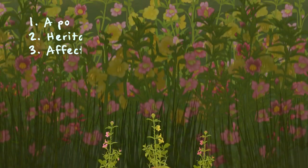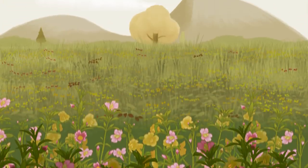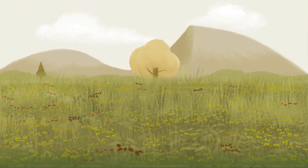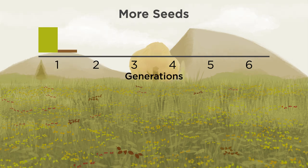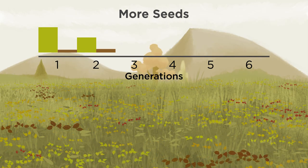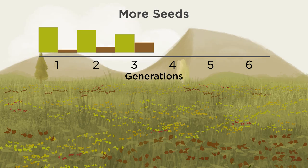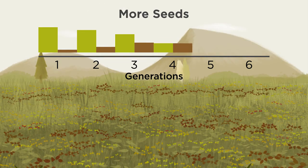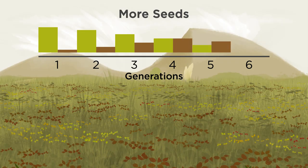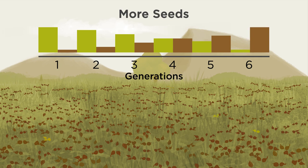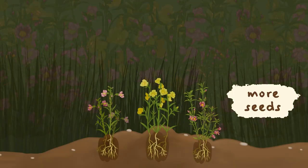That means in the next generation, the more seeds trait will be a little more common, and plants that make fewer seeds will be a little less common. This pattern continues with each generation. Over time, differences in reproduction cause a shift at the population level. The more seeds trait affects reproduction directly.